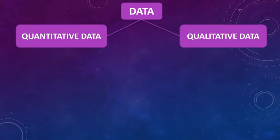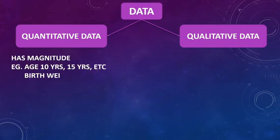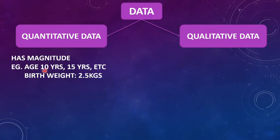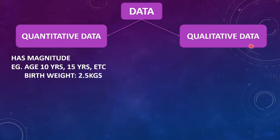Quantitative data is something which has magnitude. In simpler words, quantitative data is information about quantities — that is, information that can be measured and written in numbers. For example, age can be measured and written in numbers: 10 years, 15 years, etc. Another example is the weight of a newborn, which can be measured and written in numbers, for example 2.5 kgs.